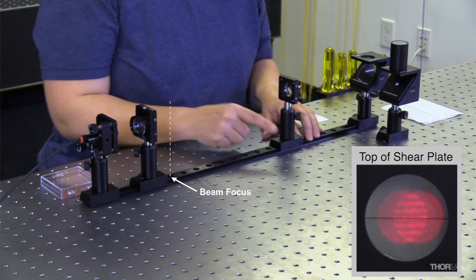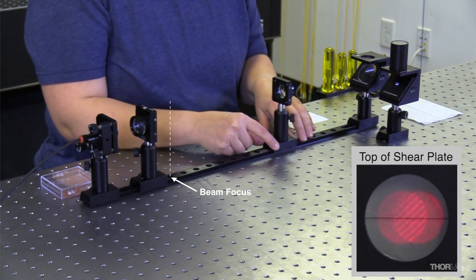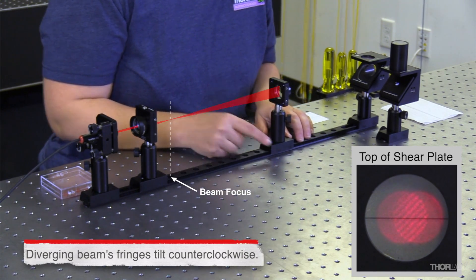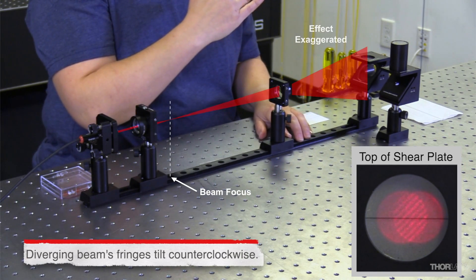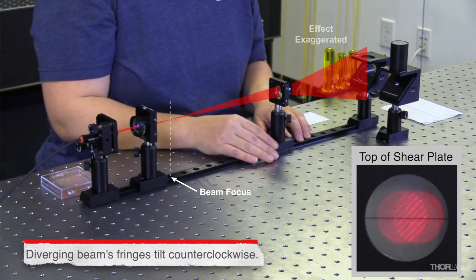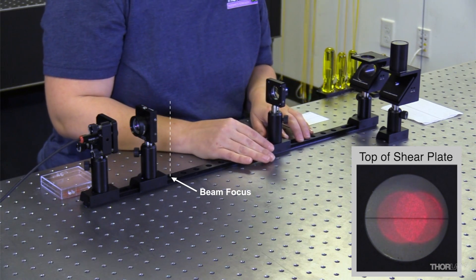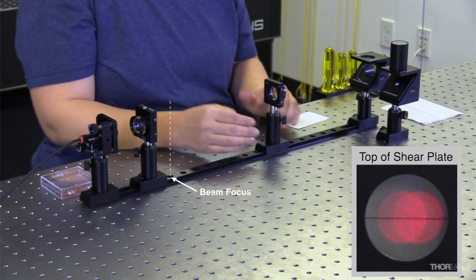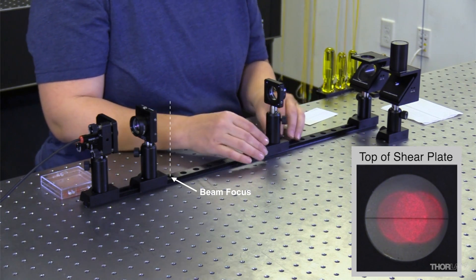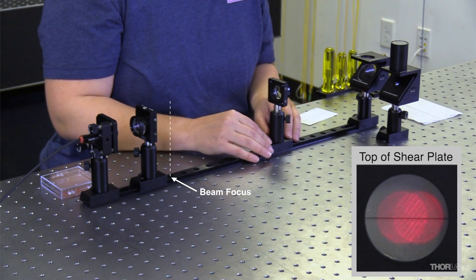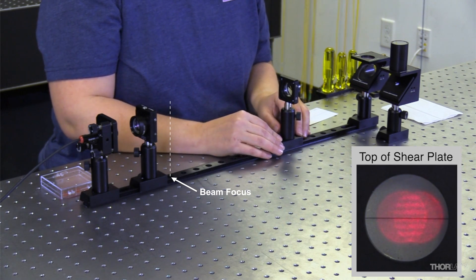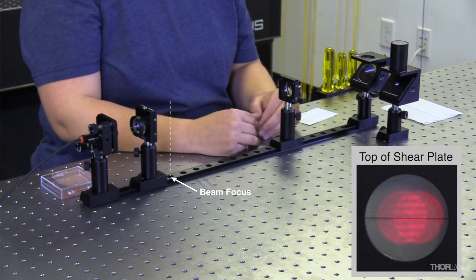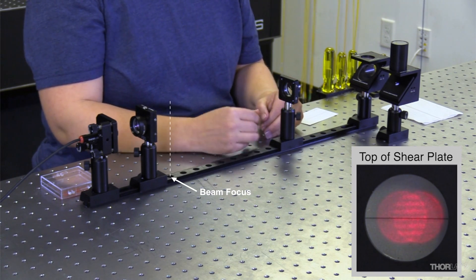As I move back closer to the focus, they rotate towards me and get smaller and closer together. Eventually as I get so close together, I can't see them anymore. So that's what I'm seeing when I'm very far away from best collimation. I can see these fringes line up. This is telling me my beam is well collimated at this point.